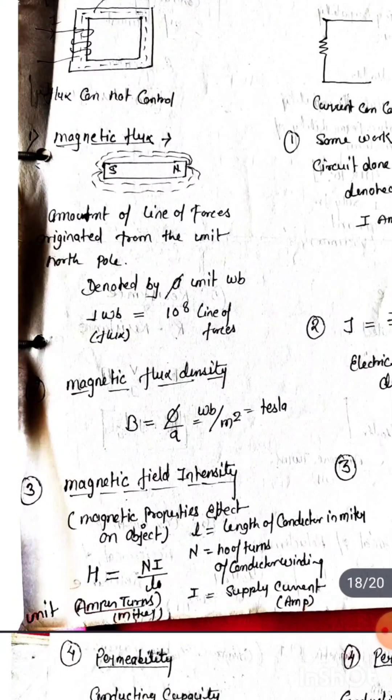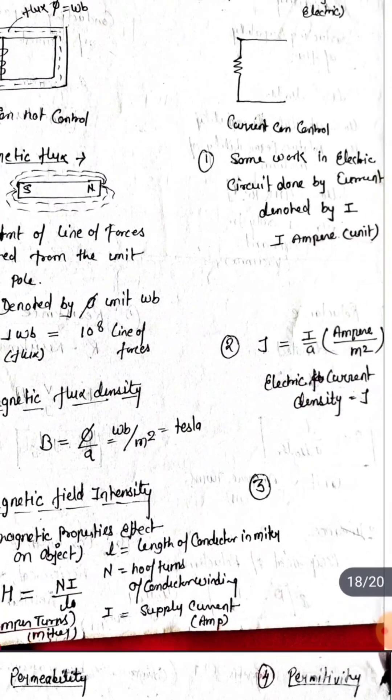Magnetic flux density B is equal to phi by A, where phi is measured in weber and area in meter square, so the unit is tesla.